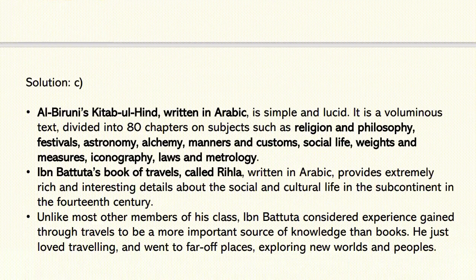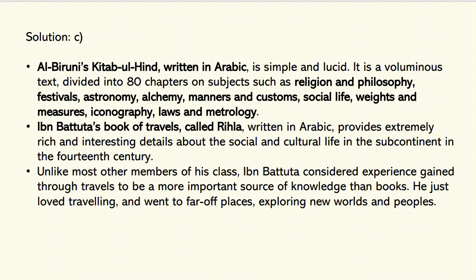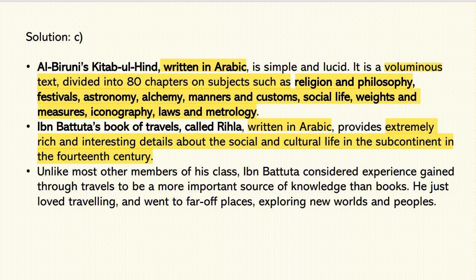Al-Biruni's Kitab-ul-Hind is written in Arabic — it is simple and lucid. Ibn Batuta's book of travels called Rihla is also written in Arabic and provides extremely rich and interesting details about social and cultural life in the subcontinent in the 14th century. Al-Biruni's Kitab-ul-Hind is a voluminous text divided into 80 chapters on subjects like religion, philosophy, festivals, astronomy, etc. This is important from the art and culture point of view as well.